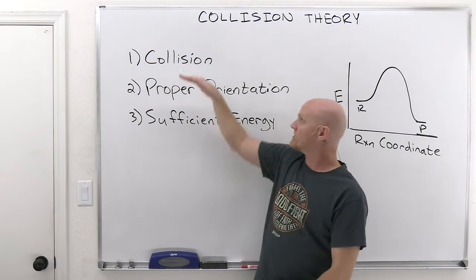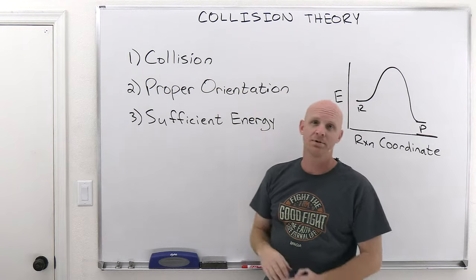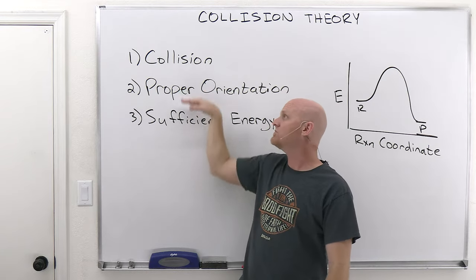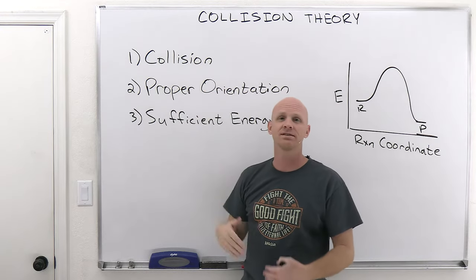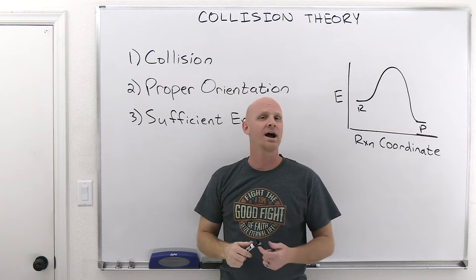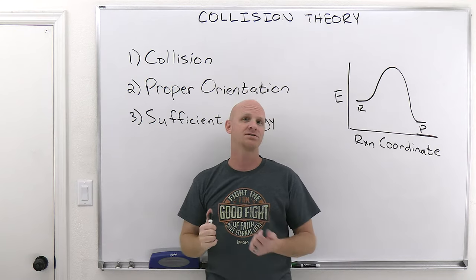So those are our three requirements: we've got to have a collision, the molecules have to be in the right orientation, and they have to have enough energy to get over the activation energy barrier. You need to understand these three parts of collision theory, and also how we use this to explain from a conceptual level why reactions tend to go faster at higher temperatures.